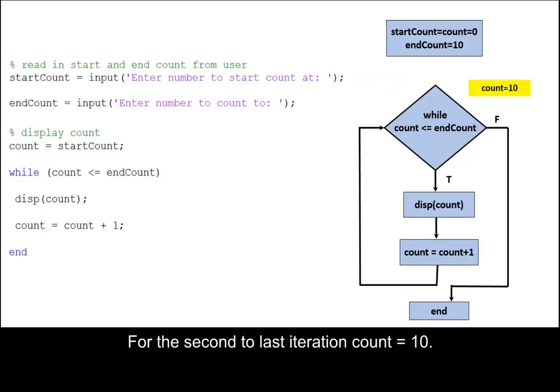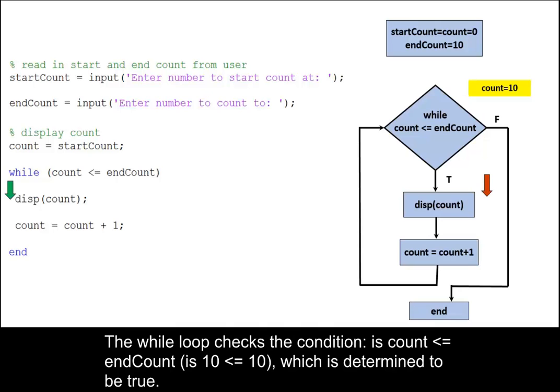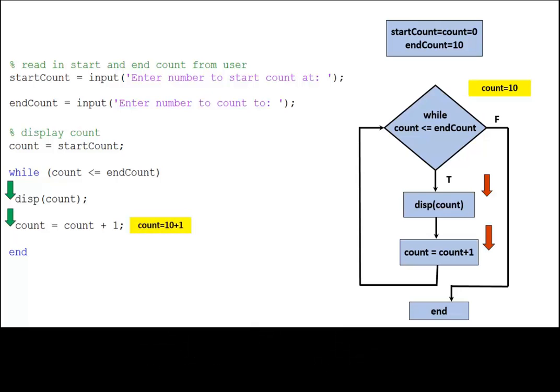For the second to last iteration, count equals ten. The while loop checks the condition: is count less than or equal to endCount? Which is determined to be true. As shown, the loop is executed once again. The loop returns to the beginning.